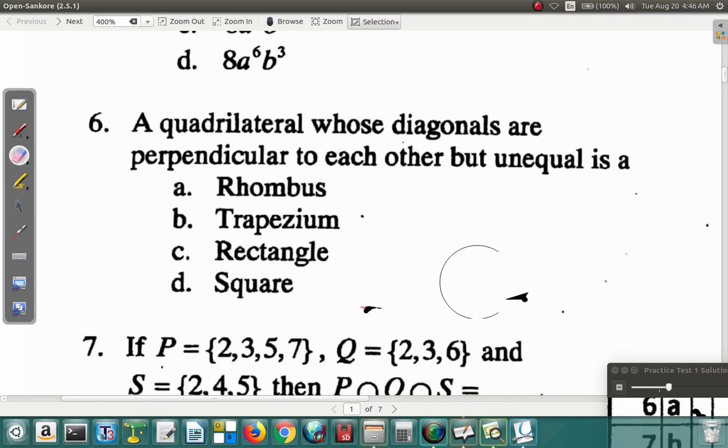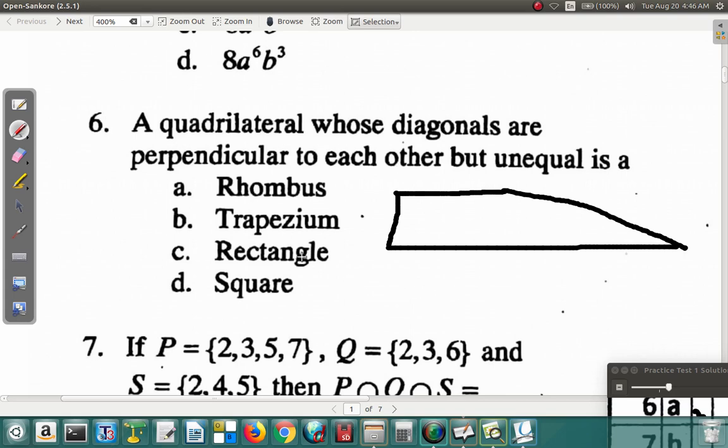Now, why is it not a trapezium? Let's say I have my trapezium here. Let's say that this is my trapezium. Diagonals. I have this diagonal and I have that diagonal. They are unequal. But guess what? The angles between them is not necessarily... it's not 90 degrees at all in this case. So, it's not a trapezium.